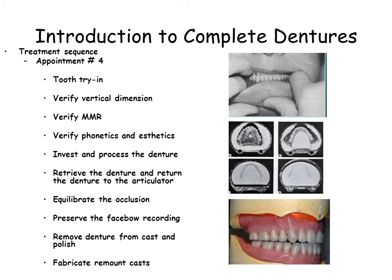At the fourth appointment, you will try in the teeth, verify the vertical dimension, verify the MMR, and verify the aesthetics and phonetics. In the laboratory, you will finalize waxing the denture. The denture is invested and processed, then retrieved and returned to the articulator. You will then equilibrate the occlusion to eliminate processing error. It is a good idea at this time to preserve the face bow mounting. The denture is then removed from the definitive cast and polished. This procedure will destroy the definitive cast; therefore, remount casts should be made at this time.